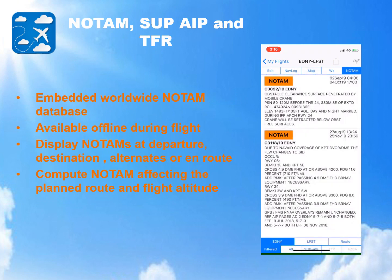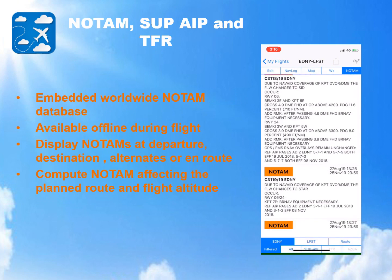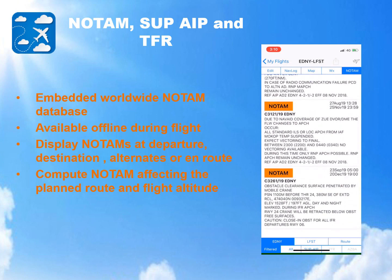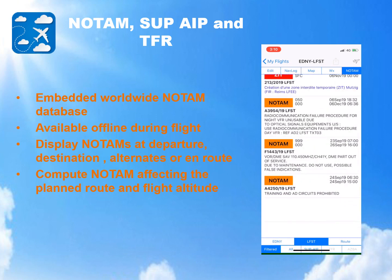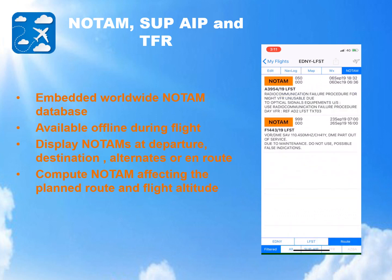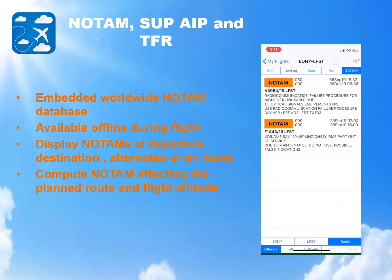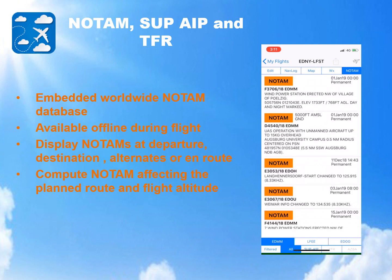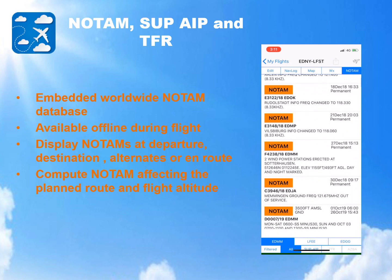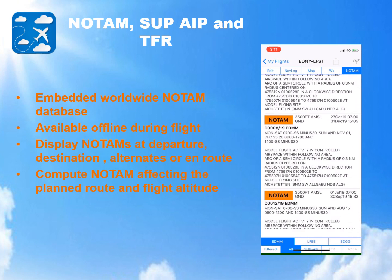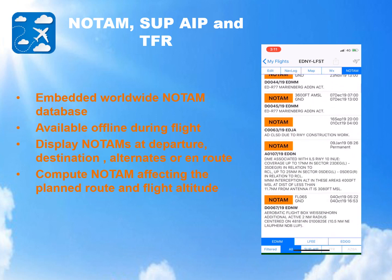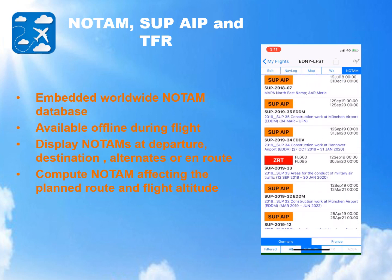The NOTAM tab displays NOTAMs and other information such as TFR or temporary flight restrictions. Bottom tabs allow displaying NOTAMs at departure, destination, en route, or all. If you have indicated in the flight planning form the planned flight altitude, AirMet will use it to filter NOTAMs affecting your flight altitude. SUP, AIP, or TFR information may also be viewed.